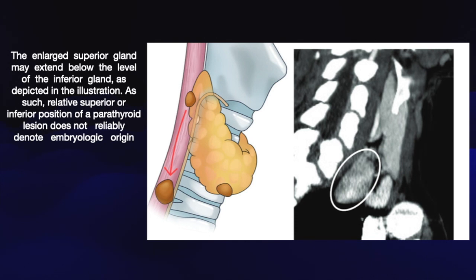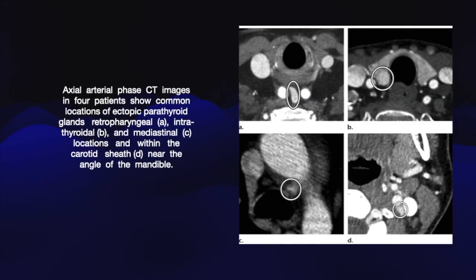Generally, the superior glands are dorsal to the tracheoesophageal groove and the inferior parathyroid glands are positioned anteriorly. We use the tracheoesophageal groove as an anatomical landmark because it closely mimics the plane of the recurrent laryngeal nerve, which we usually cannot see on imaging. The tracheoesophageal groove is effectively a proxy for the recurrent laryngeal nerve.